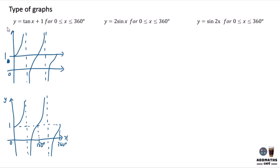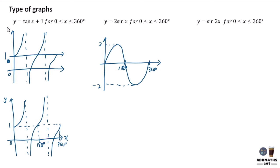Y equal to 2 sin x. 2 sin x means your maximum height and minimum height will be changed. Same period as sin x — 360 degrees and 180 degrees — but the maximum height here will be 2, and the minimum height here will be negative 2. Label 0, y, and x.